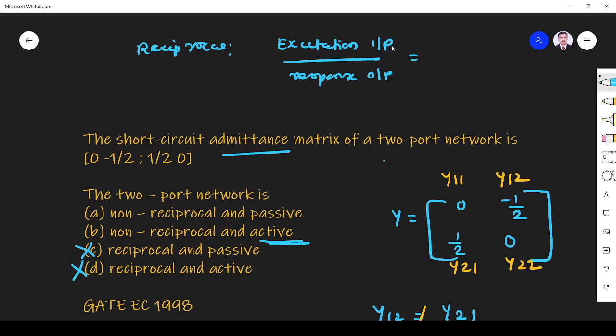If excitation and response are interchanged, if the condition is satisfied then only it is called reciprocal network. But in active network, if you change the excitation from input to output, the response will change.